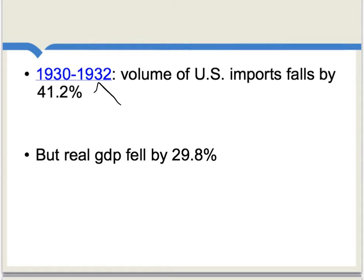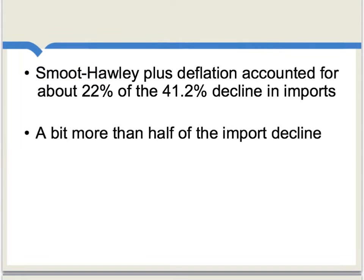If we look at 1930 to 1932, we find that the volume of U.S. imports, all things considered, fell by about 41.2%. By no means was all of that due to Smoot-Hawley, because at the same time real GDP was falling by about 29.8%, and that's going to cut back on imports too. Irwin's best estimate is that Smoot-Hawley plus the subsequent deflation accounted for about 22% of the 41.2% decline in imports over this period — so Smoot-Hawley caused a bit more than half of the overall import decline.